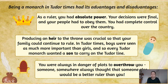It was also important to produce an heir, usually a son, to the throne, because it was crucial for the family bloodline to be continued and to be able to rule. In Tudor times, boys were seen as much more important than girls, and every Tudor monarch wanted a son to continue the Tudor bloodline.